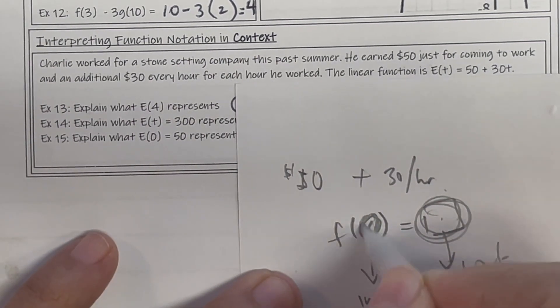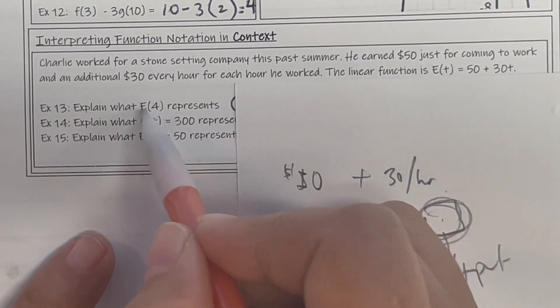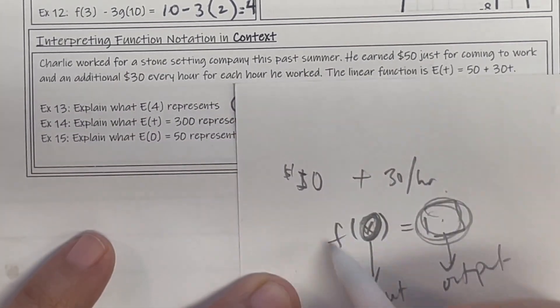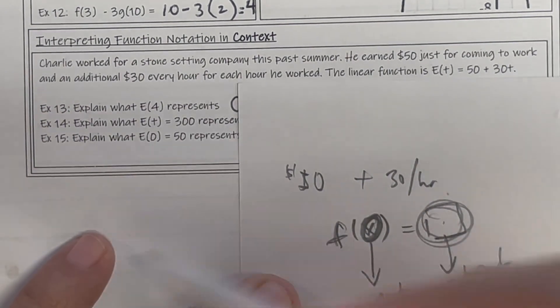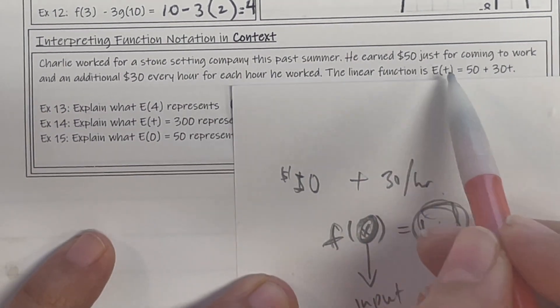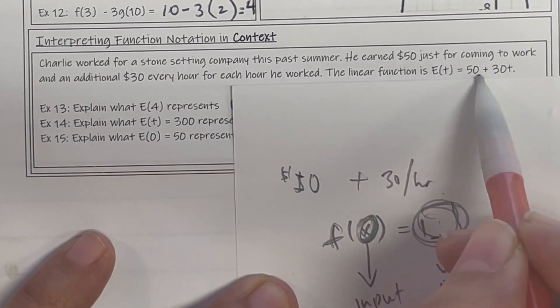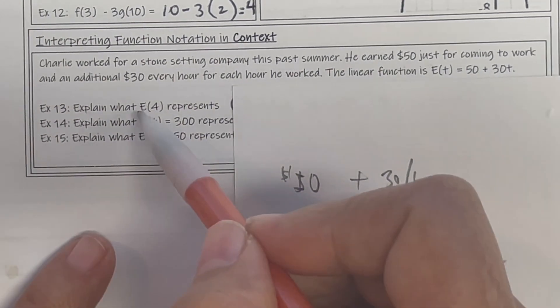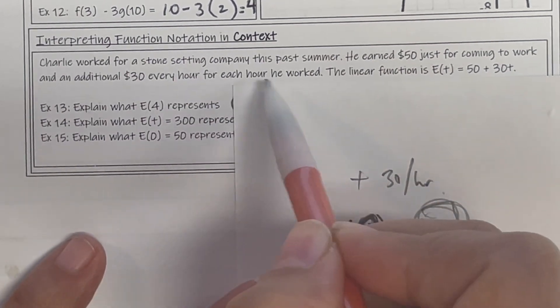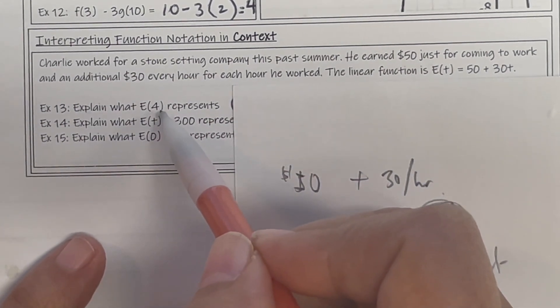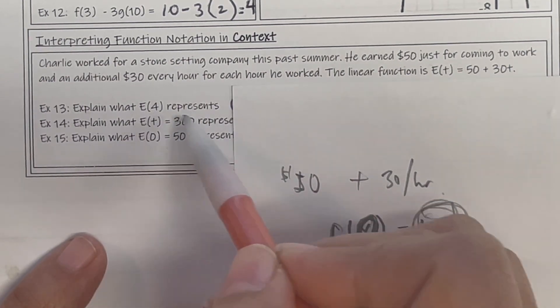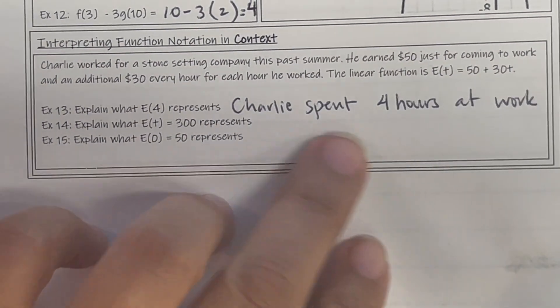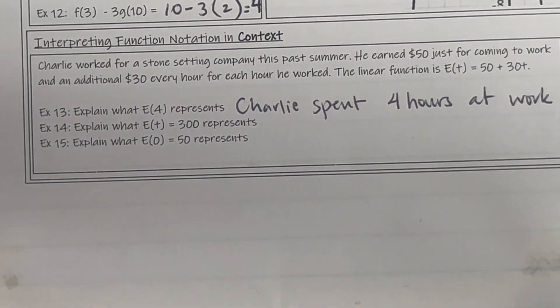So this X right here, or E of 4, because the function is called E, not F. It doesn't matter what letter it is, it could be G, it could be X, it could be anything. So the function E, I'm putting in my time, I'm going to get out this output. So what does E of 4 mean? Well, in this scenario, E of 4 is 4 hours. So explain what E of 4 represents: Charlie works 4 hours or he spent 4 hours at work. Go ahead and write that down.